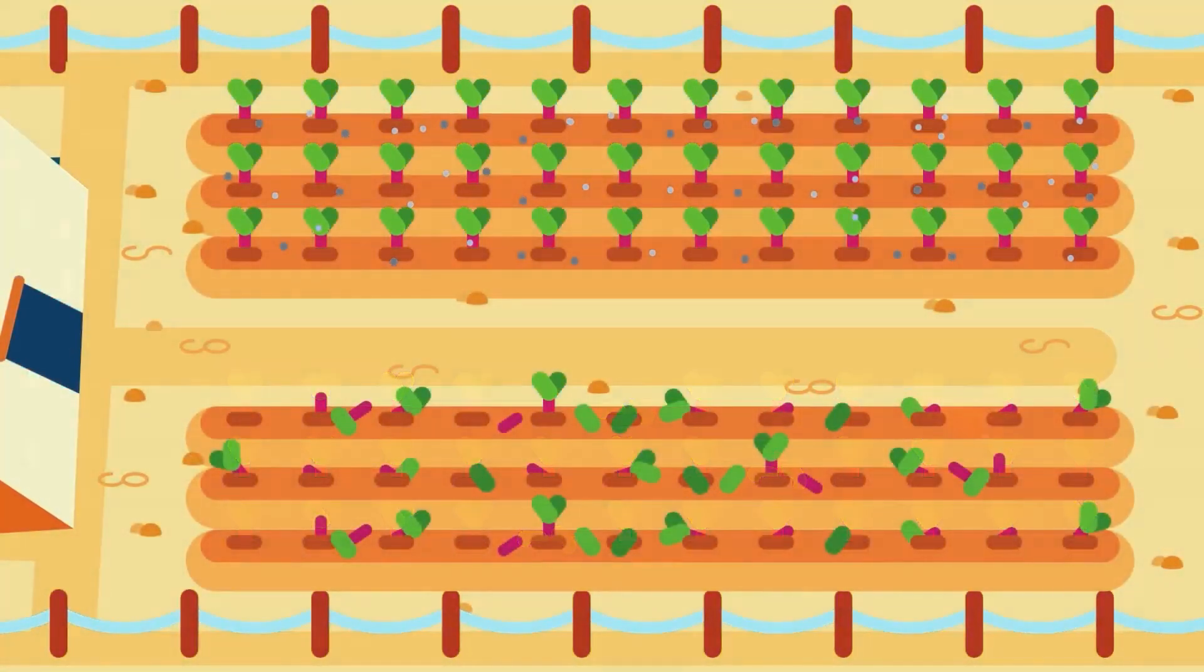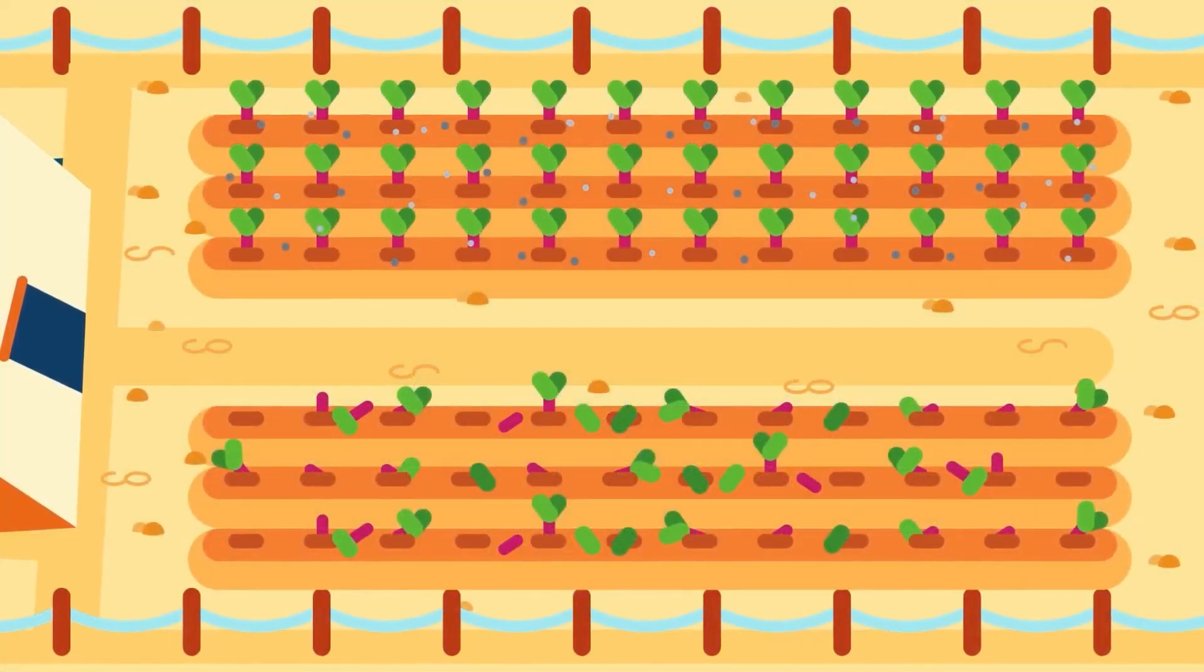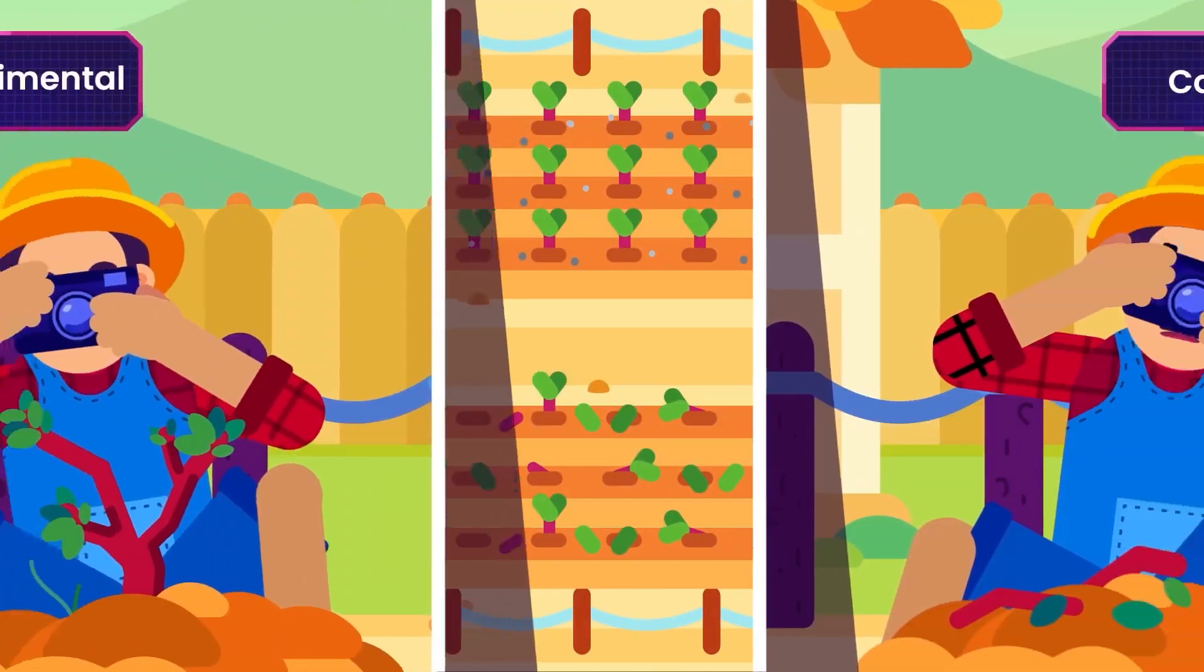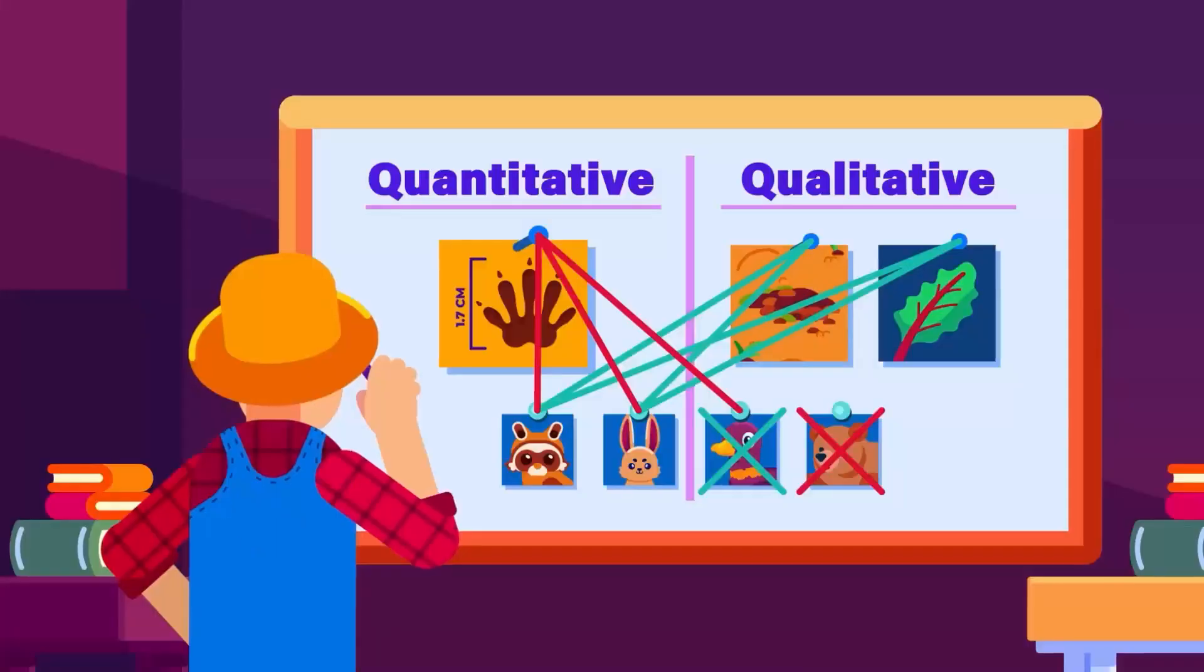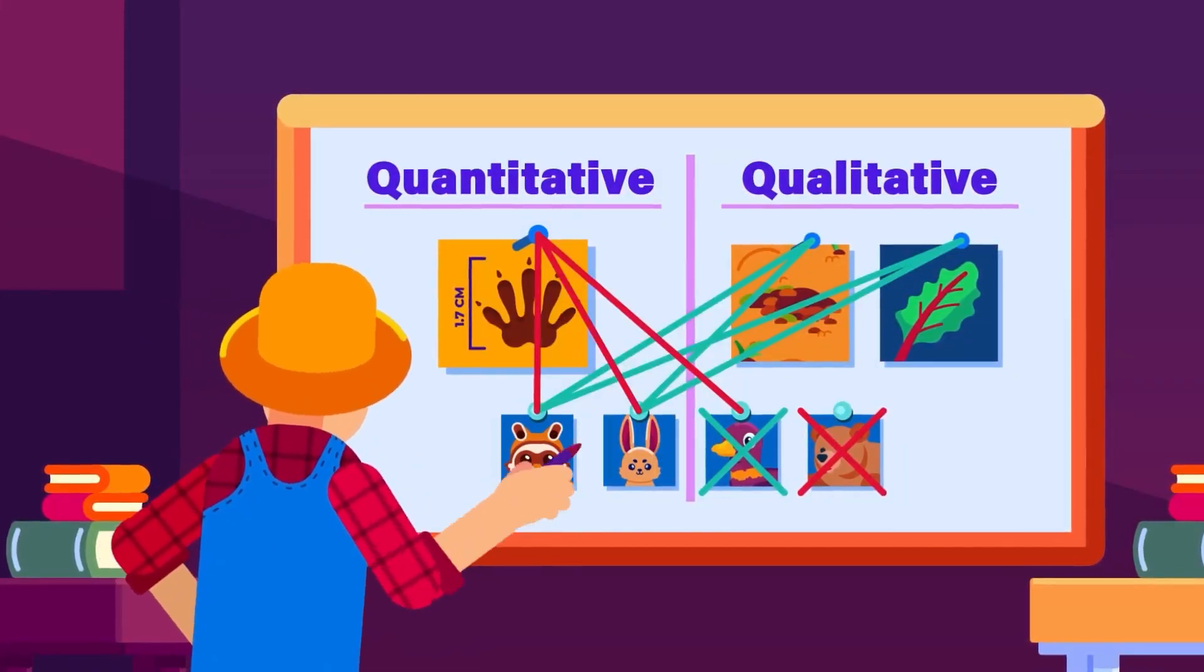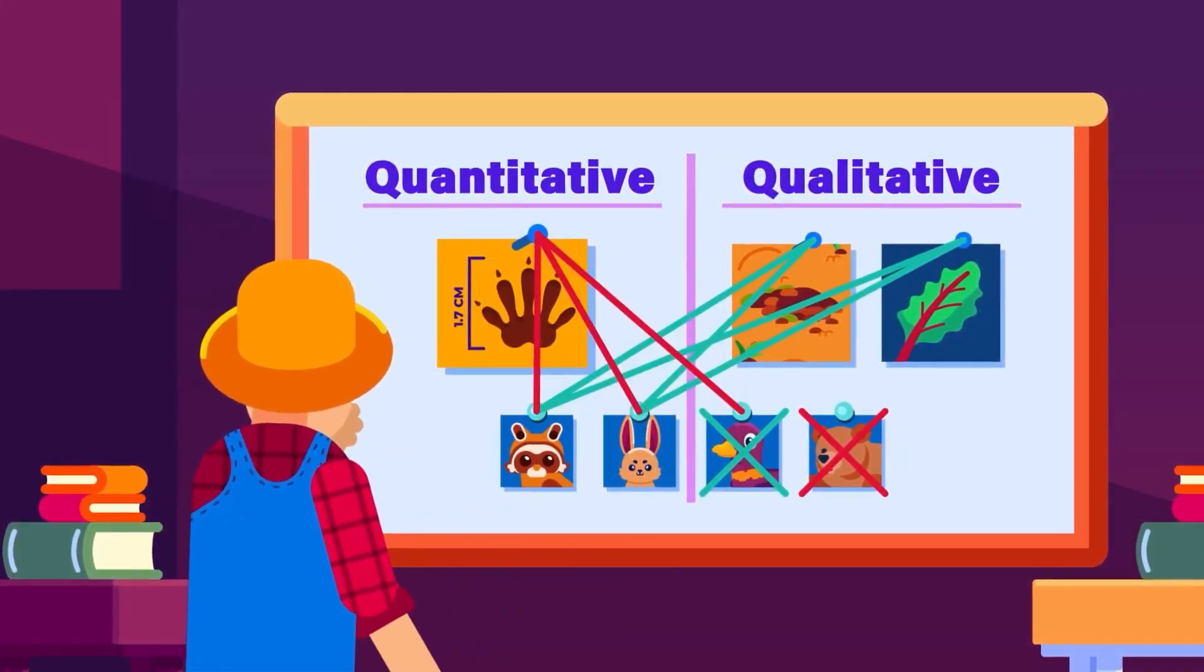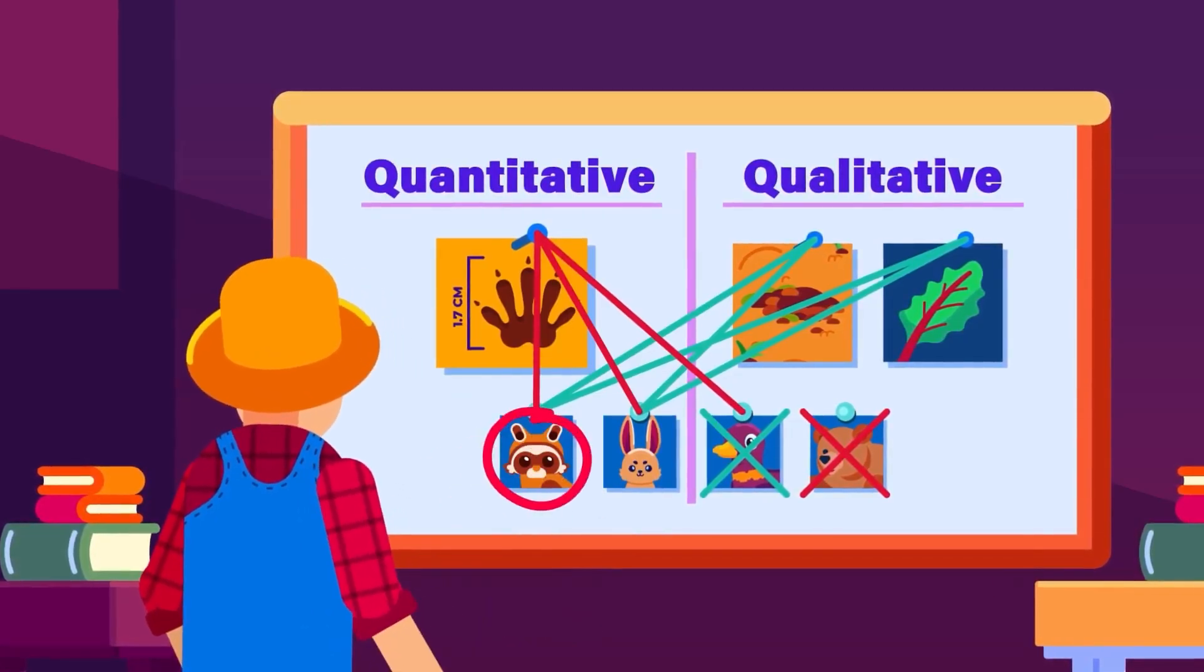After conducting the experiment, analyze the results and compare them to your hypothesis. Take note of how many plants were damaged in both experimental and control groups the next day. Compare your finding and determine if it validates your hypothesis. If it does, you can conclude that raccoons are the garden attackers.